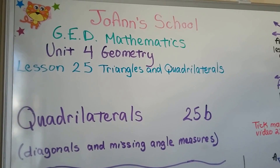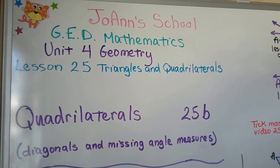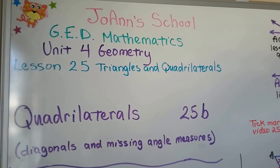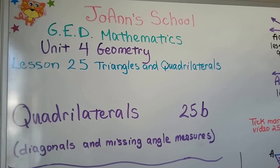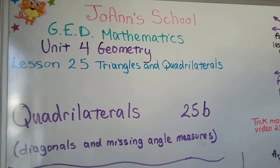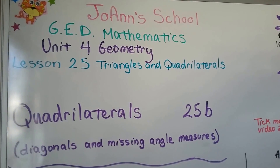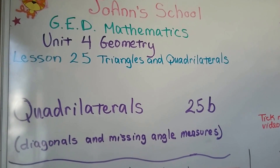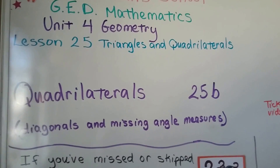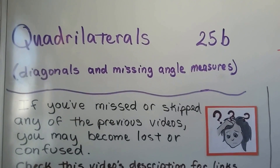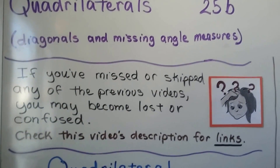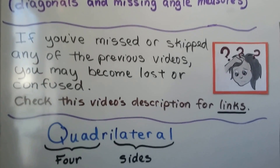We just got finished talking about triangles, and now we're going to talk about quadrilaterals. This is lesson 25b. We're also going to talk about diagonals and missing angle measures. And, you know me, I've got links in the description to help you.